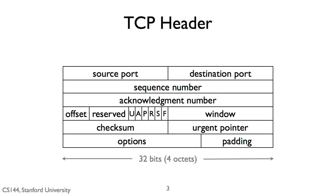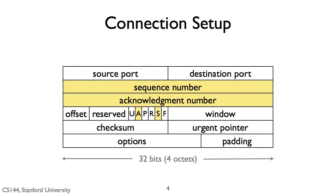Here's the standard TCP header with its standard 20-byte payload and then options. For connection setup, as we've seen before, there are four parts of the header that are used: the sequence number, the acknowledgement number, the ACK bit, and the SYN bit.